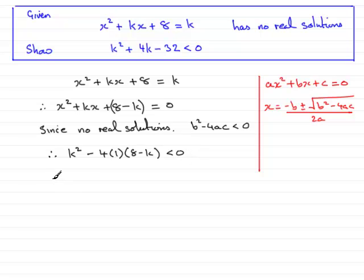So all I need to do now is just expand the bracket here. We've got minus 4 times 8, which is minus 32. And minus 4 times minus k is going to be plus 4k, and that is less than zero. And you can see that we've basically got this up here, just need to change the order of the terms. So we have k squared then plus 4k minus 32 is less than zero.